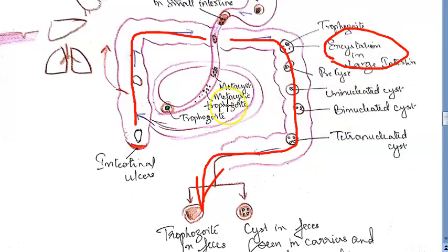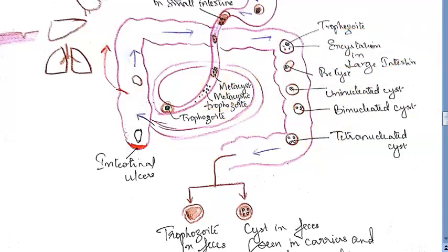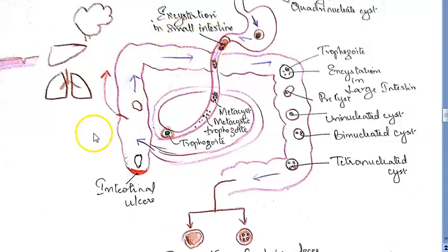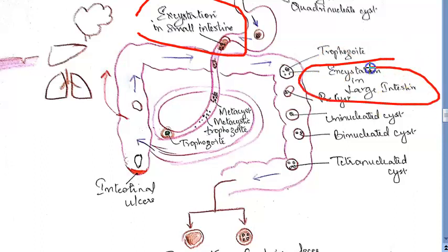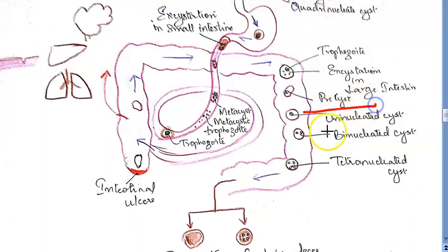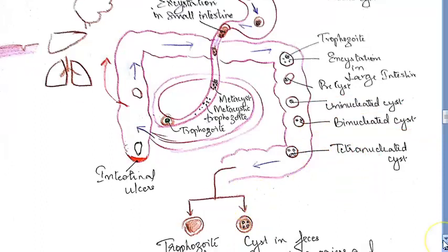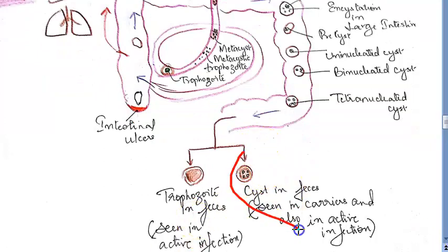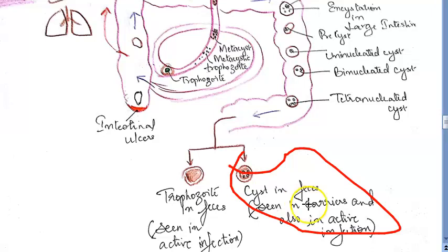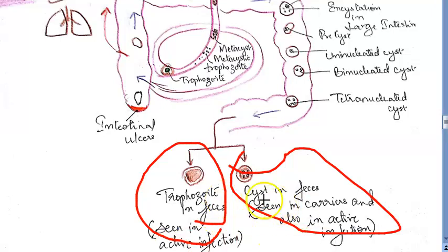The trophozoite wants to exit via feces, so it undergoes encystation in the large intestine. In the small intestine, excystation happened; in the large intestine, encystation occurs — it goes back to cyst form. You can see: pre-cyst, uninucleated cyst, binucleated cyst, and tetranucleated cyst. This tetranucleated cyst comes out in the feces. If someone eats contaminated food with this cyst, they will also get intestinal and extra-intestinal amoebiasis. Trophozoites in feces indicate active infection; cysts alone suggest carriers.